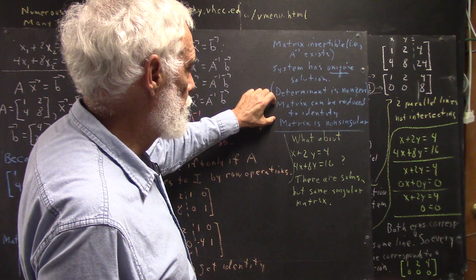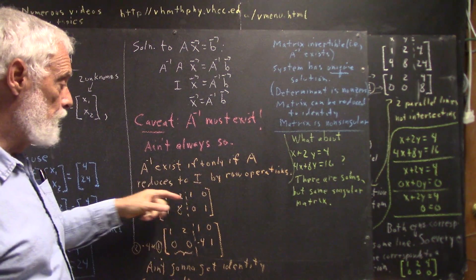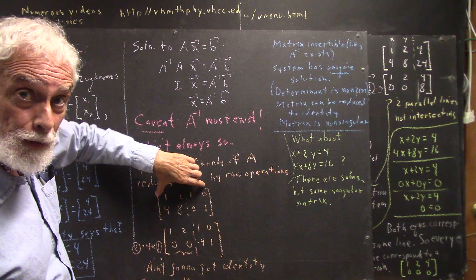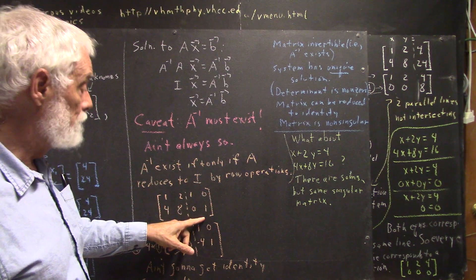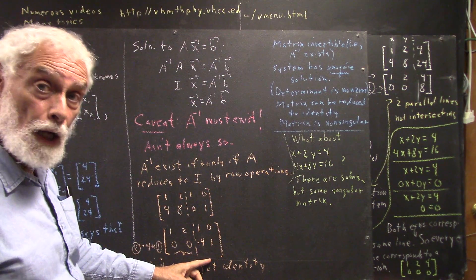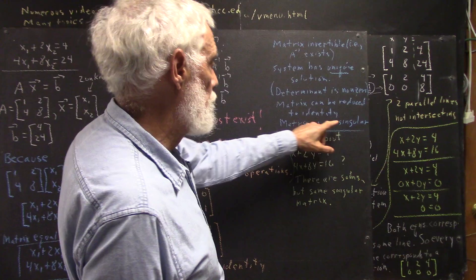So, it can be reduced to the identity because if you can reduce it to the identity, it can reduce this matrix to the identity. Which means that your identity matrix will, in the reduction process, become the inverse matrix. And also, the matrix is non-singular.